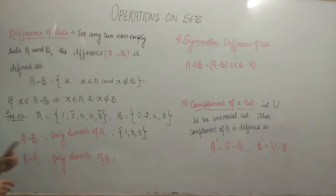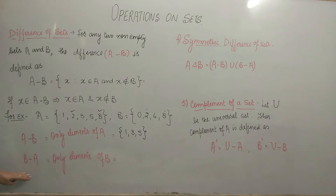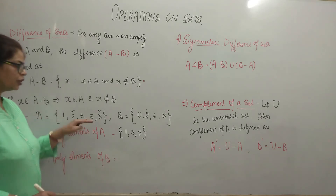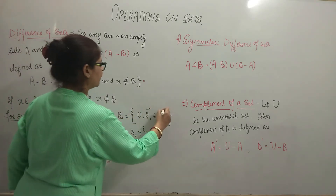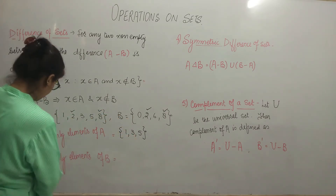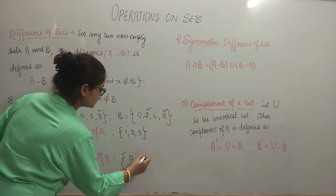Ek baar aur exercise karte hain. Let us find B minus A. B minus A means only elements of B. Yani ab woh elements jo A ke paas common hain — B aur A ke common elements hain, unko chhodd denge. Hum pehle hi find out kar chuke hain ki dono sets mein jo common elements hain woh 2 and 8 hain. So 2 aur 8 ko chhodd denge. Toh B minus A will give you 0 and 6.